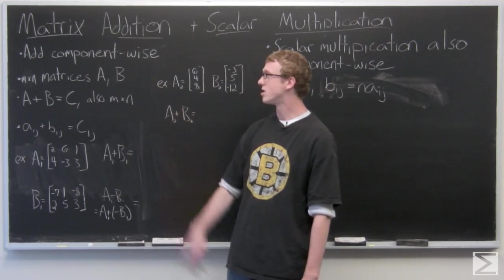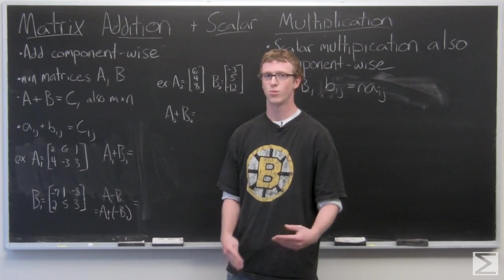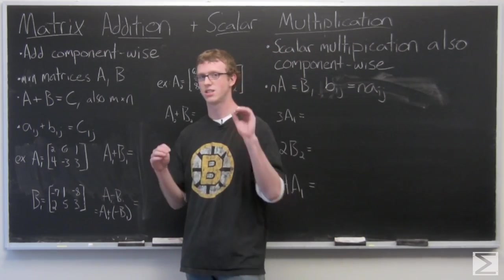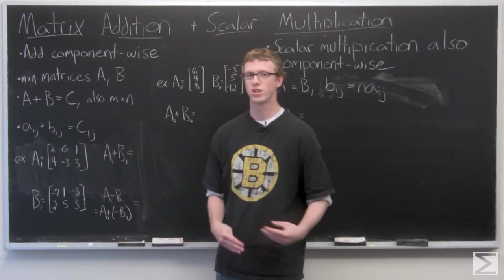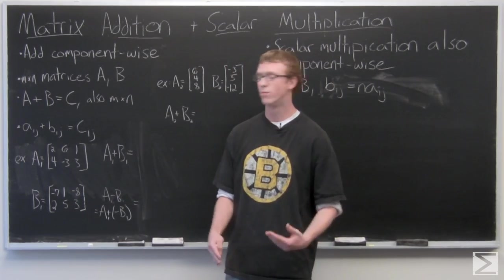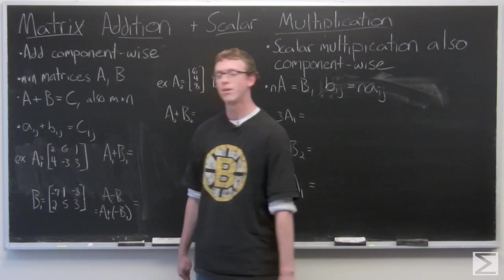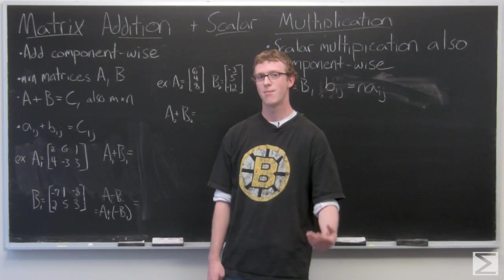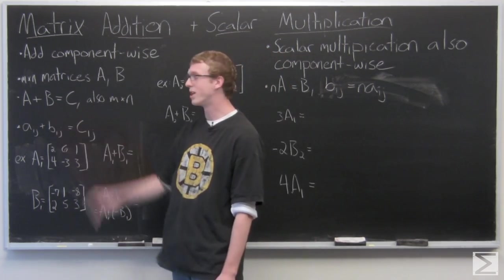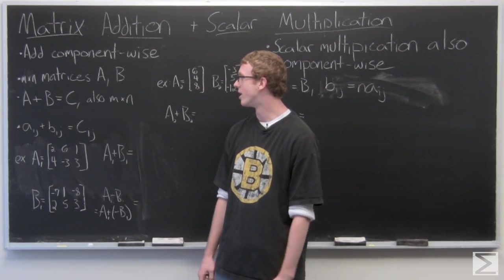You add matrices component-wise, so basically what that means is whatever entry in the first matrix and whatever entry in the second matrix in the same position, those are added together to form the resultant matrix. The result will be in the same position in the resultant. So we have M by N matrices A and B. M by N simply means M rows and N columns. And we have A plus B equals C. The resultant matrix is also an M by N matrix.